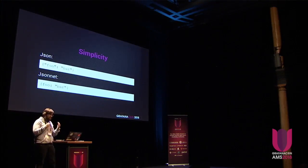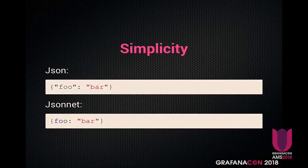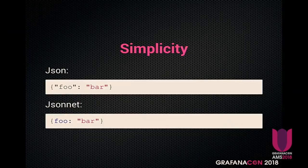Also, in JSON you have double quotes around key names, but in JSONNET you don't need them — it's not required because the key will be static anyway, so it's very logical. You can still use the quoted form in JSONNET, but ideally you should use the simpler form so you have more readable templates.